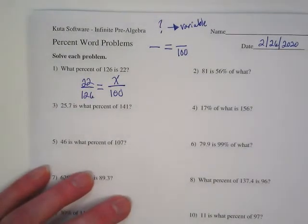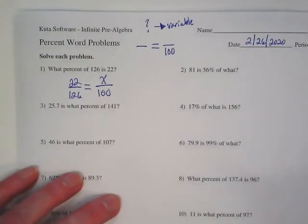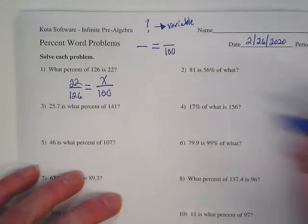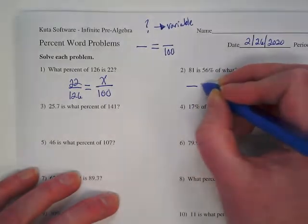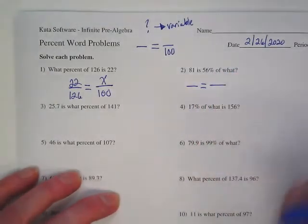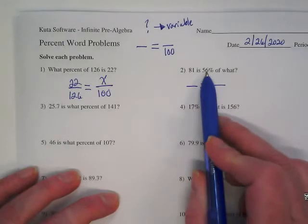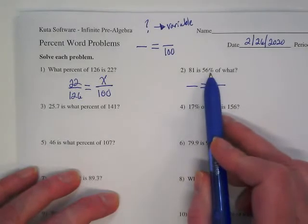We'll do the cross multiplying later. Let's move on to number two. 81 is 56% of what? We know the percent ratio from this. Because we see 56%, that's going to be 56 over 100.